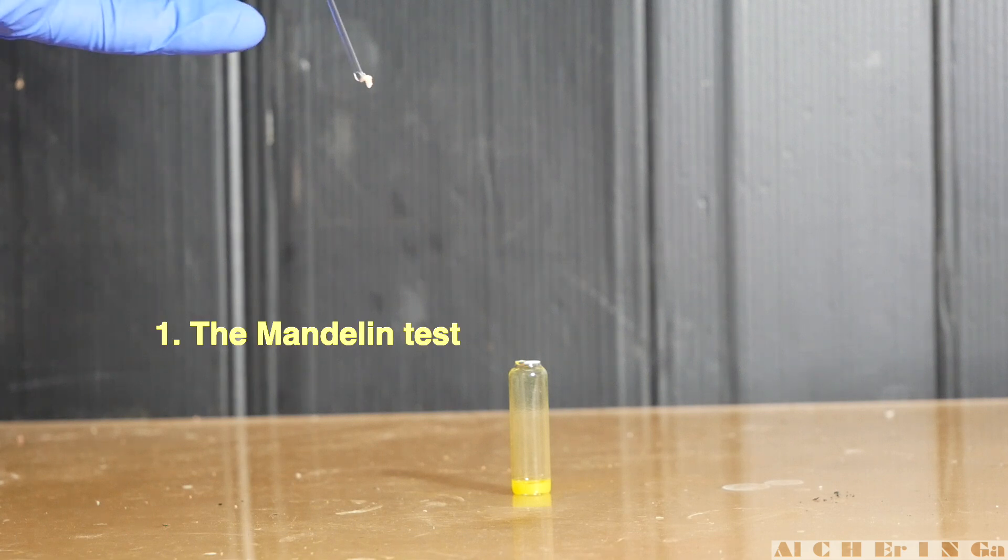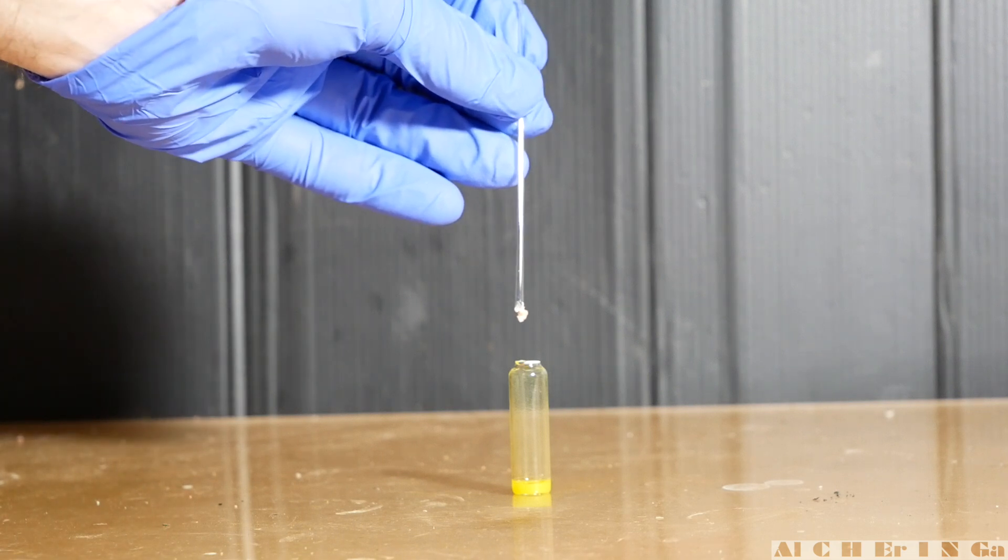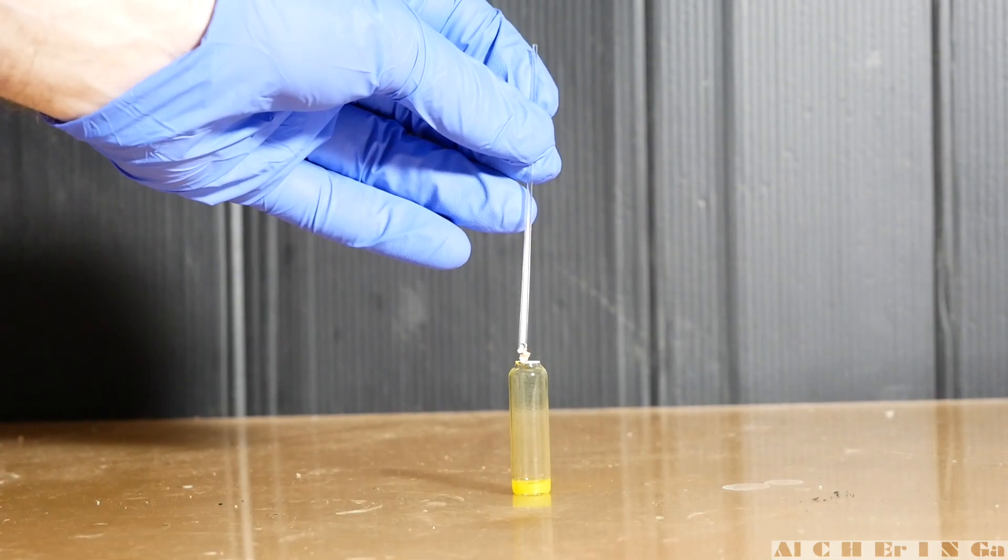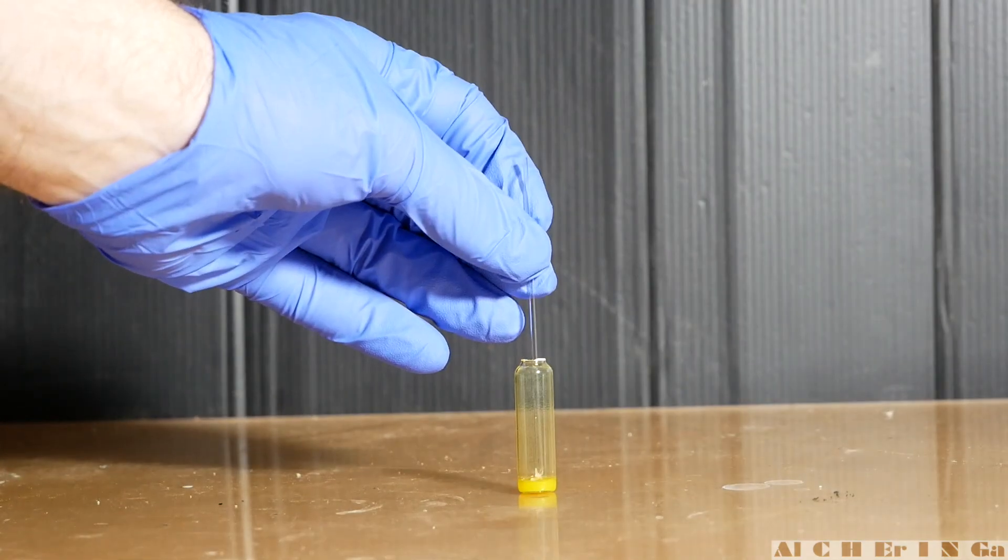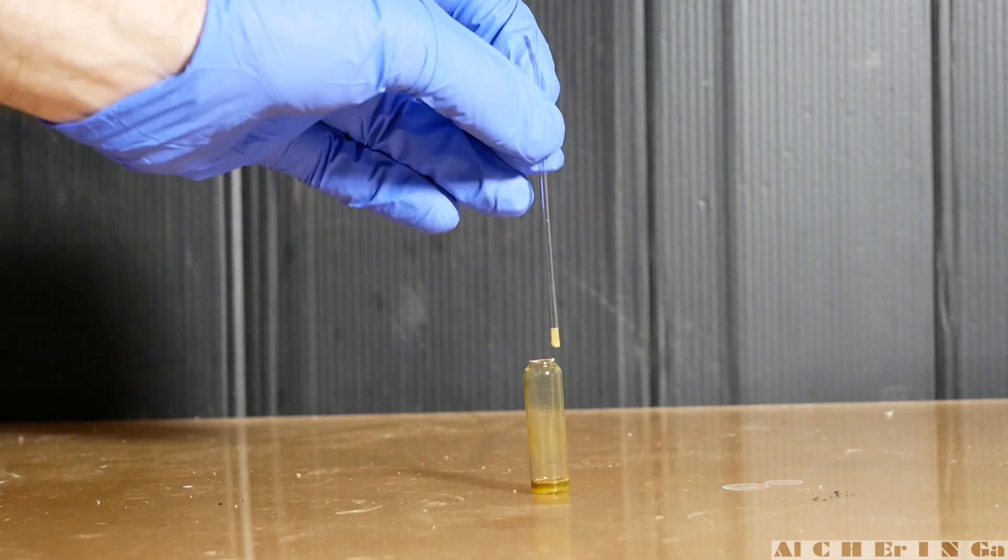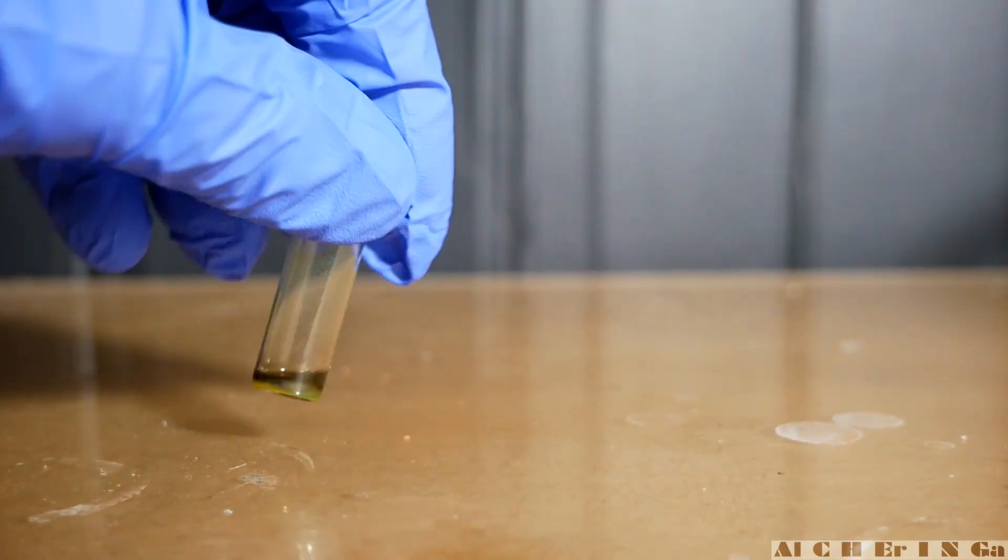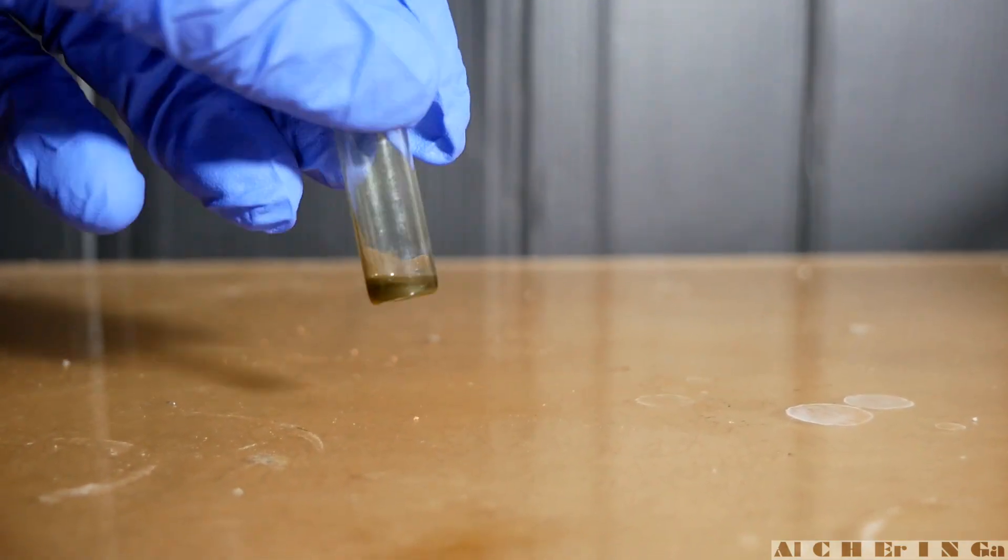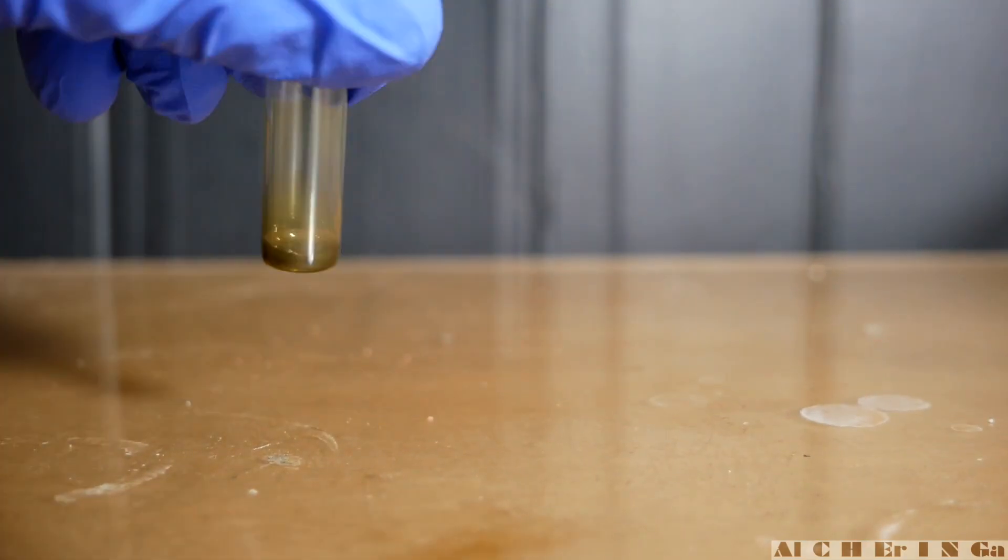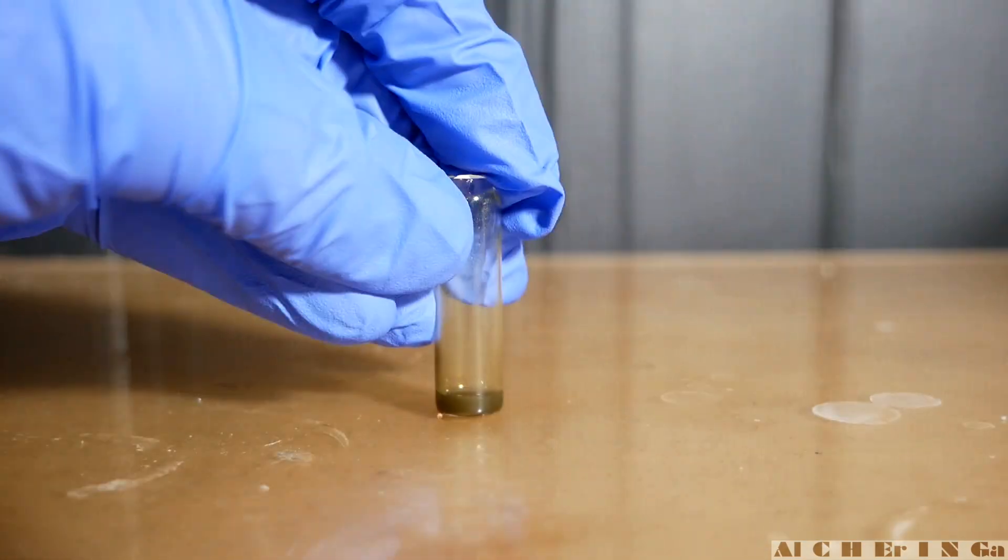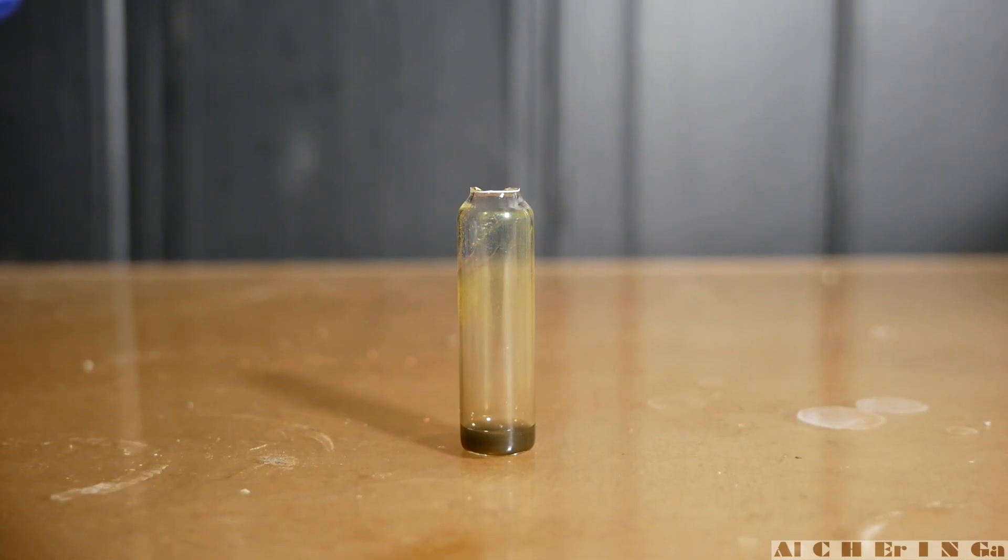First up is the mandolin test. This reagent is composed of a mixture of ammonium vanadate and concentrated sulfuric acid. A small amount of the product was added into the glass vial, swirled and in a few seconds later, a color change from yellow to a dark green-brown color was observed. This is a positive test for 2-amino-1-phenyl-propane hydrochloride.